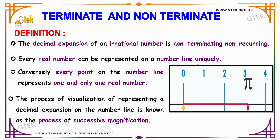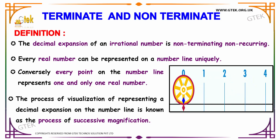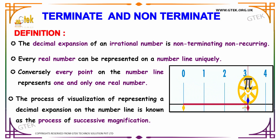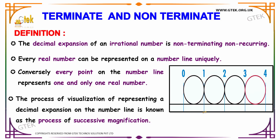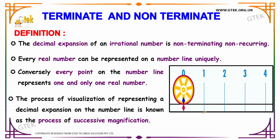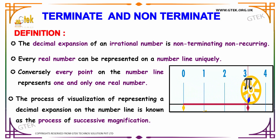Conversely, every point on the number line represents one and only one real number. The process of visualizing and representing a decimal expansion on the number line is called the process of successive magnification.